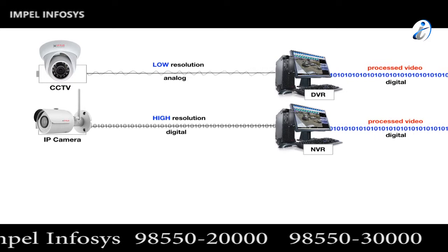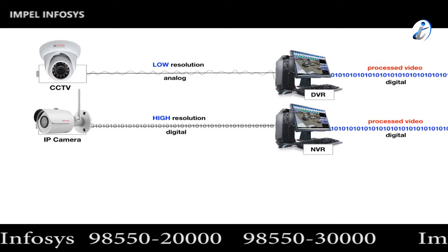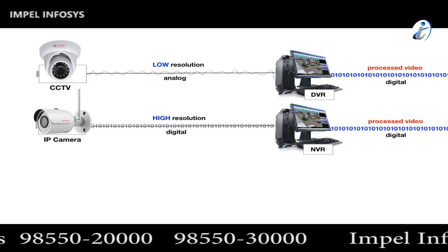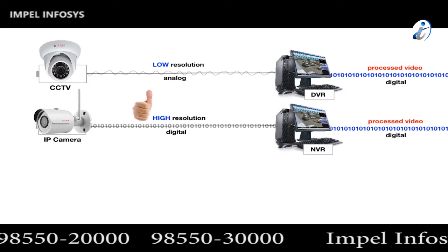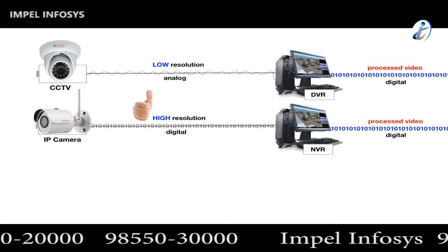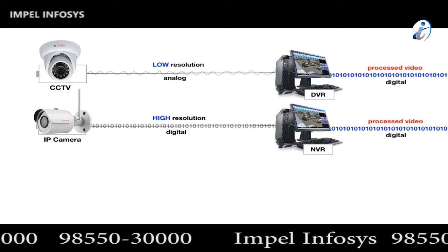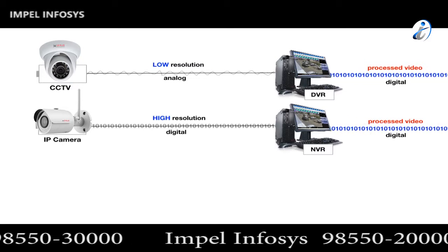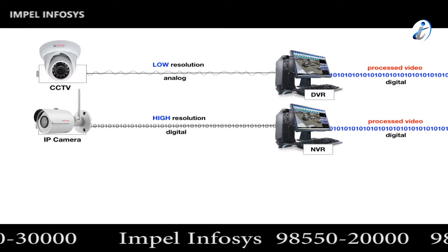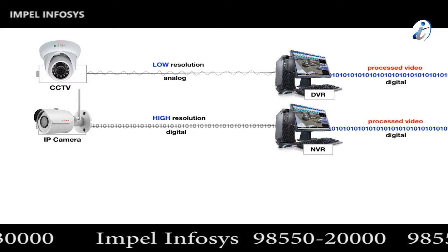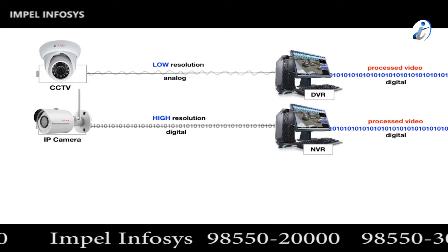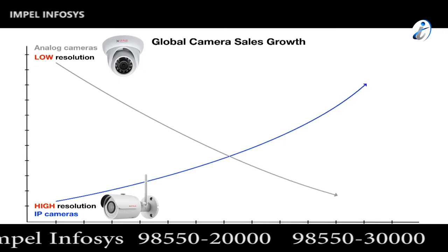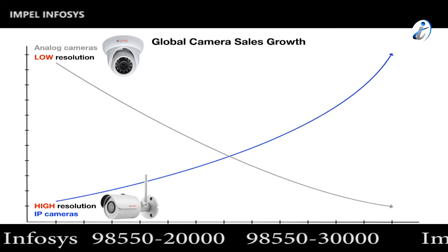There are other benefits to IP video over CCTV, such as using existing network infrastructure; however, higher resolution is the main selling feature. While analog to digital DVR systems will be around for some time, there is a fast churn away from CCTV over to IP video, which is reflected in global camera sales figures. IP camera sales are increasing while analog camera sales are declining.